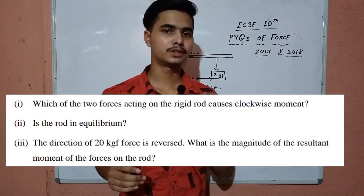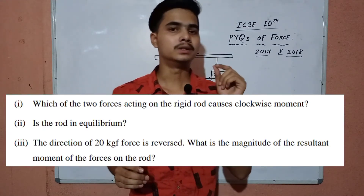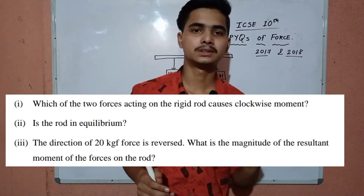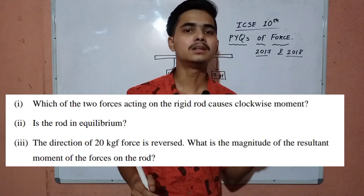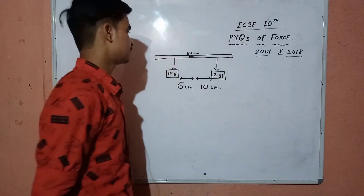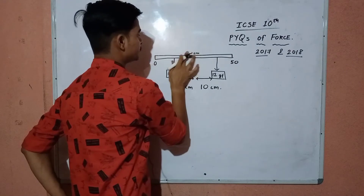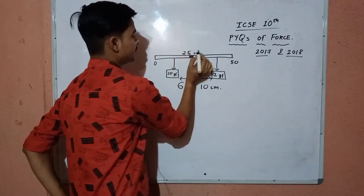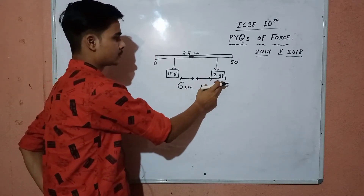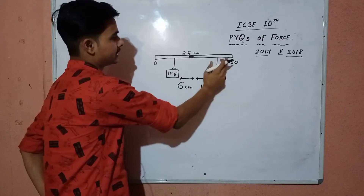There are three questions. First: which of the two forces acting on the rigid rod produces a clockwise moment? Second: is the rod in equilibrium? Third: if the direction of the 20 gram force is reversed, what is the resultant magnitude of the total moment of the two forces? Since this is a half meter rule, its total length is 50 centimeters and the midpoint — where it is pivoted — is at 25 centimeters. The 20 gram force is 6 centimeters from the pivoted point and the 12 gram force is 10 centimeters from the pivoted point.